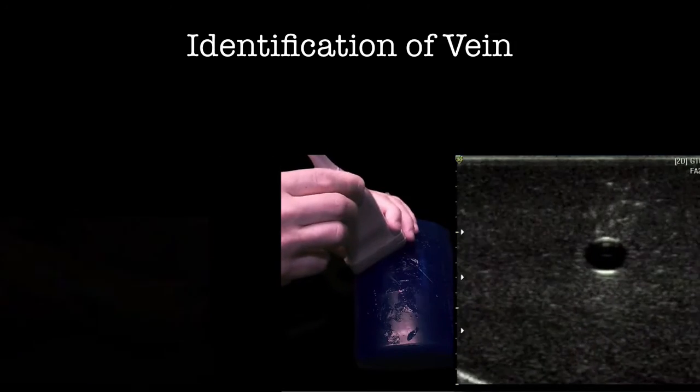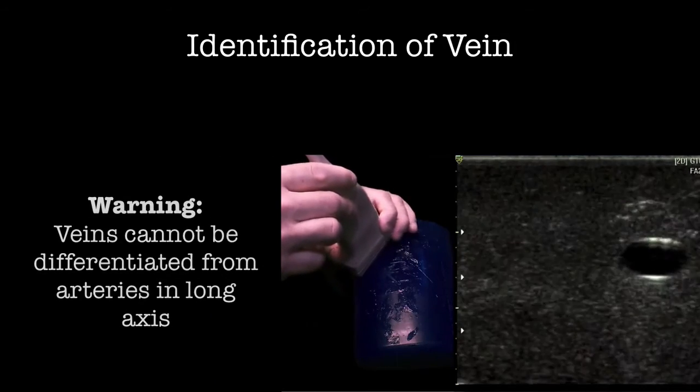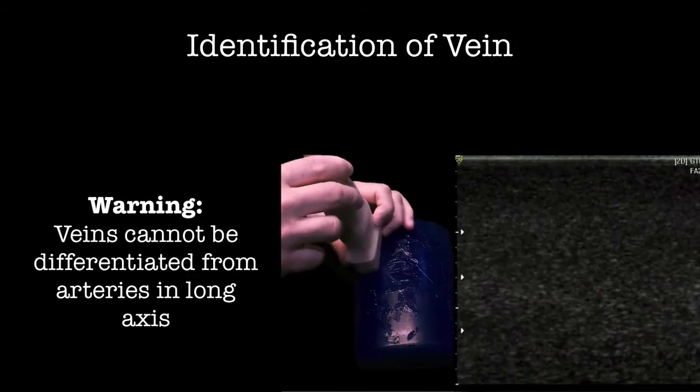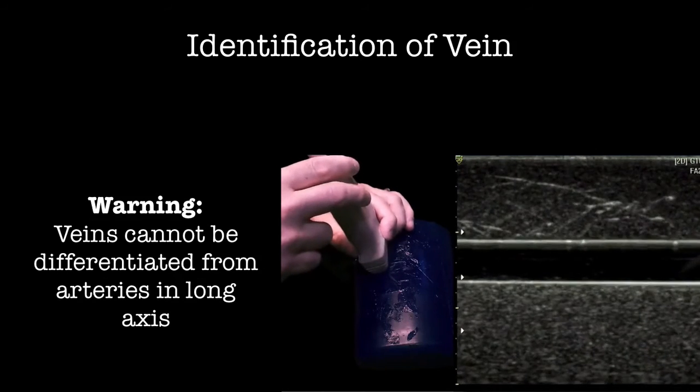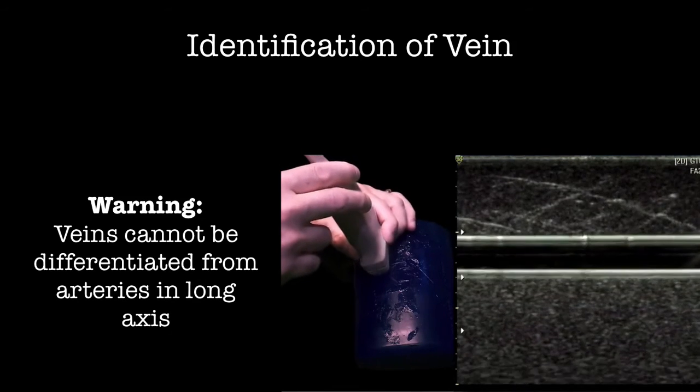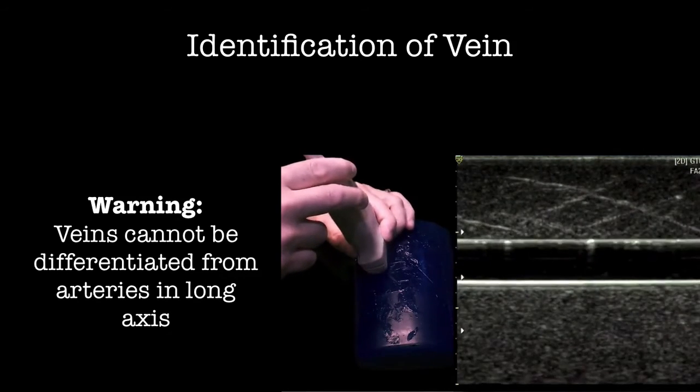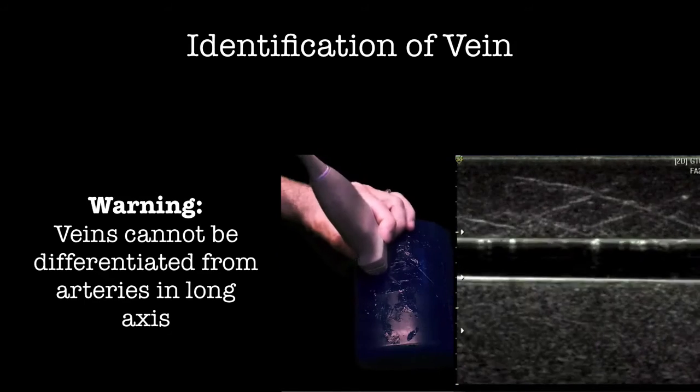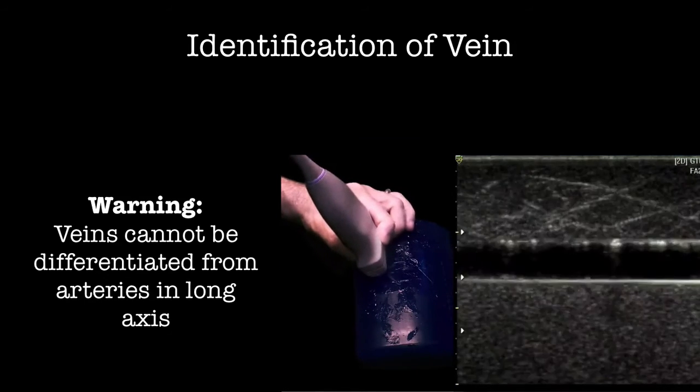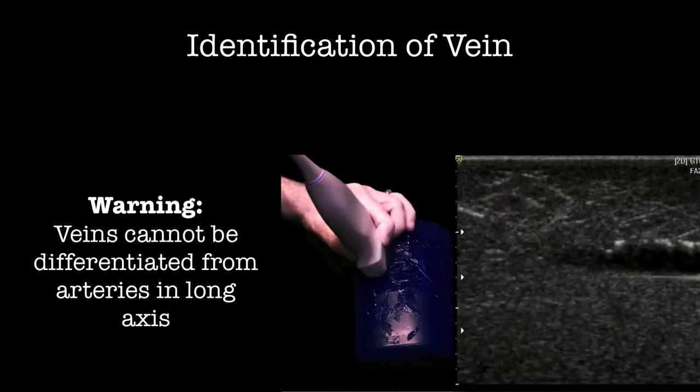Veins can never be differentiated from arteries in long axis. Many people make the mistake of sliding off the vein in long axis and thinking they are collapsing the vein as they do in short axis. They are not really collapsing the vein; they may be sliding off the artery. If the artery is misidentified as a vein, serious complications can occur.